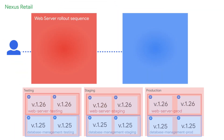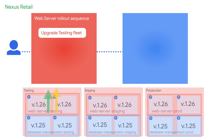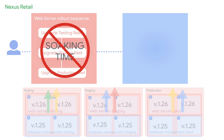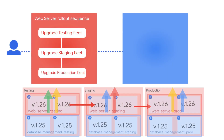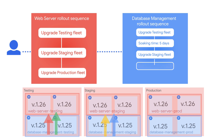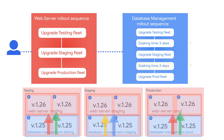For the web server team scope, the rollout sequence indicates that the scope in the testing fleet should upgrade first, followed by the scope in the staging fleet, and finally the scope in the production fleet. The platform admin doesn't want any soaking time, so the rollout to the next scope can begin as soon as the previous one is complete. For the database management team scope, the rollout sequence defines the same order, but with a soaking time of five days between each rollout.